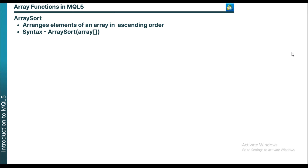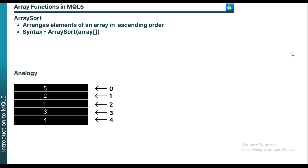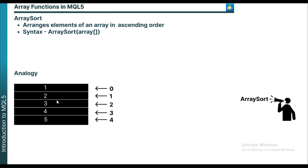ArraySort is the next function. ArraySort is used to arrange the elements of an array in ascending order. Using analogy, imagine you have an array and the elements are arranged in a way you don't want — you want it arranged from the lowest number to the highest. That is where ArraySort comes in. In the example, index 0 is 5, index 1 is 2, index 2 is 1, index 3 is 3, and index 4 is 4. You can use ArraySort to arrange these elements from lowest to highest, which is ascending order.